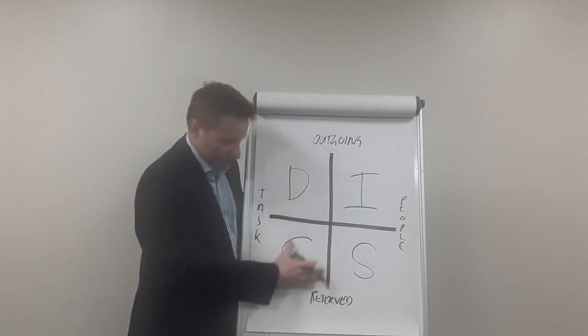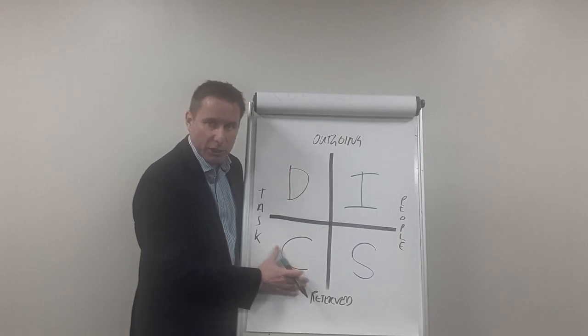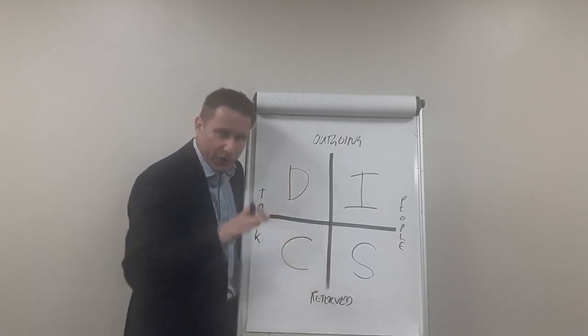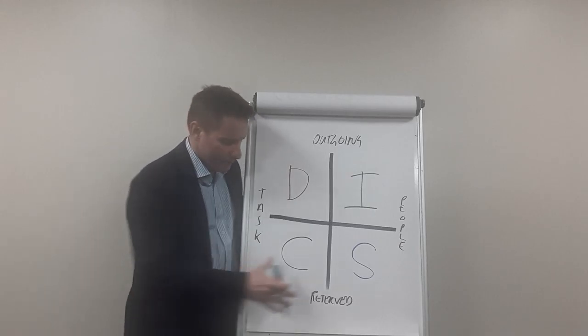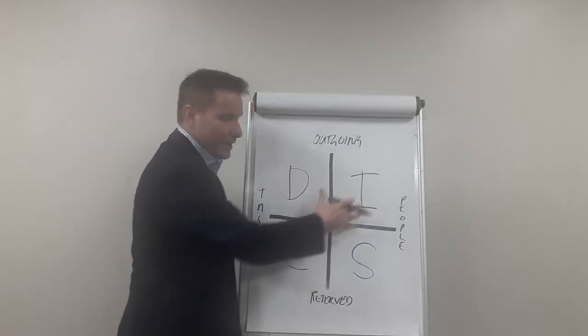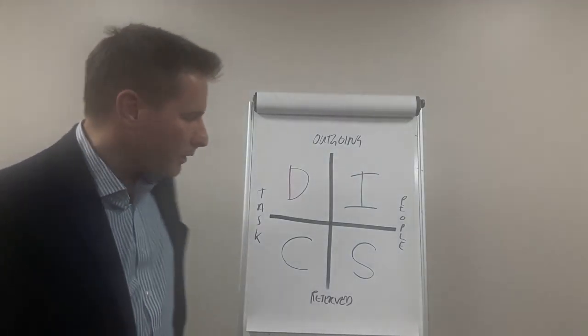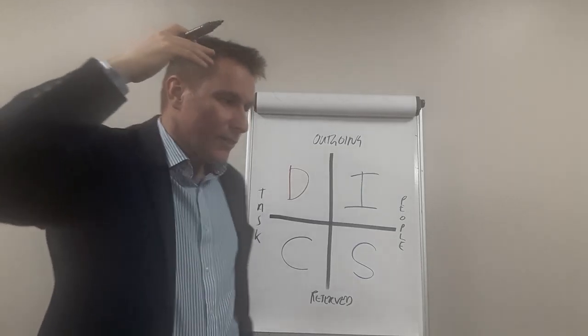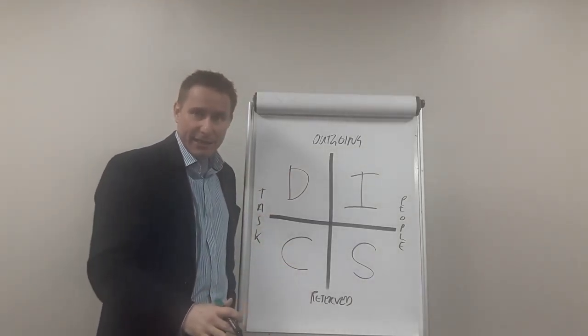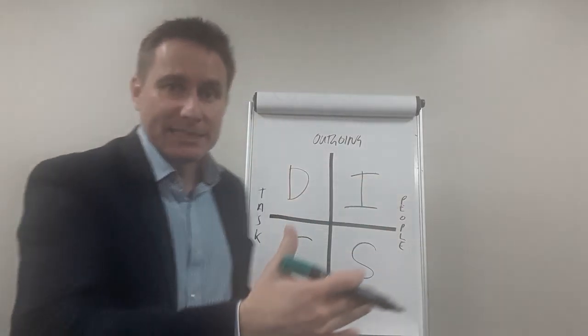But hopefully you can see with this that we've got very different types of people. Can you imagine someone who is very detailed in their orientation, as the C behavioral style is, who likes precision and the grounded, pragmatic detail of a story, and how they might interact with someone who is a high-influence behavioral style?